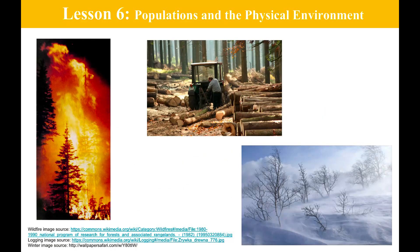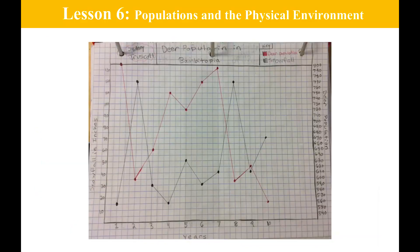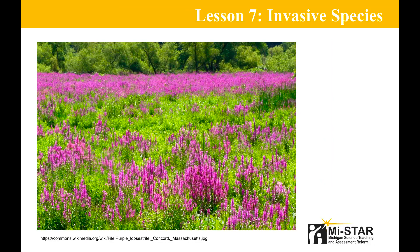In Lesson 6, students model how environmental factors can impact populations of organisms. These changes can be natural or the result of human activity. Using simulated data, students create a graph to compare the effects of snow on deer population. During Lesson 7, students examine the effects that invasive species introduction can have on ecosystems and their native species. One of the invasive species they investigate is purple loosestrife, a wetlands plant.